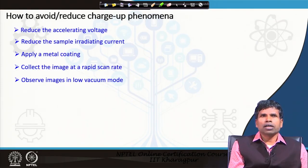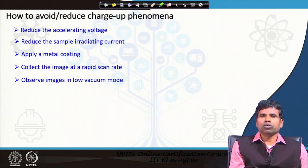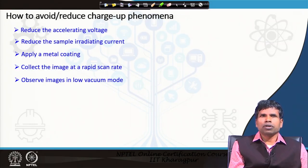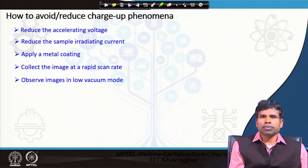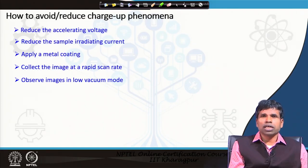Fourth, collect the image at a rapid scan rate — when you collect the image with a rapid scan rate, the electron beam does not stay longer at one point, so fewer electrons accumulate at the surface and charge build-up will be less. Fifth, observe images in low vacuum mode — in low vacuum mode, the energy of the incident beam will be lesser and therefore charge build-up will also be less. These are the different ways to avoid or reduce the charge build-up phenomenon.